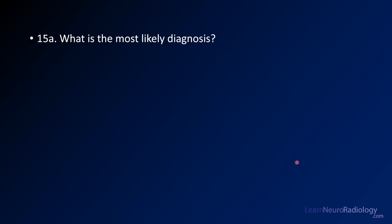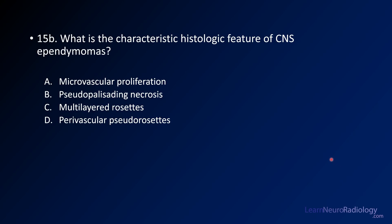The question is: what's the most likely diagnosis? It looks like a tumor — perhaps intraventricular, along the fourth ventricular outflow tract, without much enhancement. The second question asks: what is a characteristic histologic feature of CNS ependymomas? This is asking for the specific histologic term associated with ependymomas.